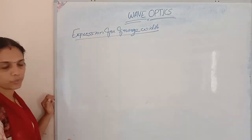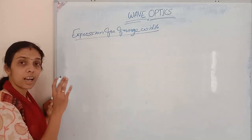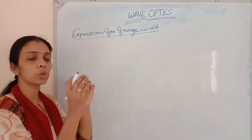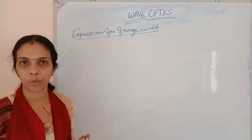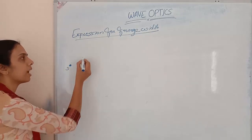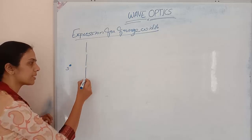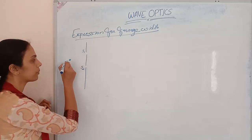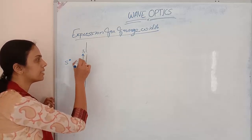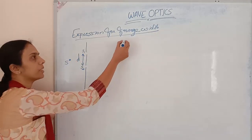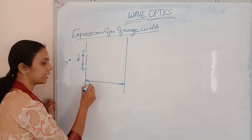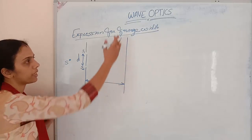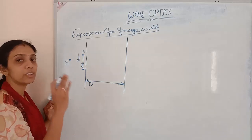To find out the fringe width, I will consider Young's double slit experiment. We consider a monochromatic source of light and two slits S1 and S2, with the source centered between them. These two slits are at a distance small letter d apart. A screen is kept at a distance capital letter D from the slits. Light waves emerge from both slits, and alternate dark and bright fringes are observed on the screen.